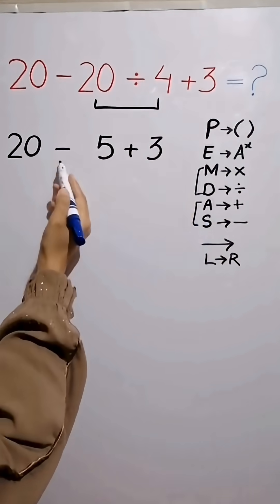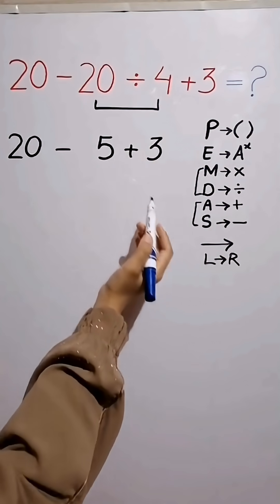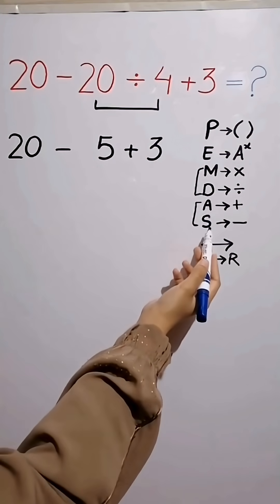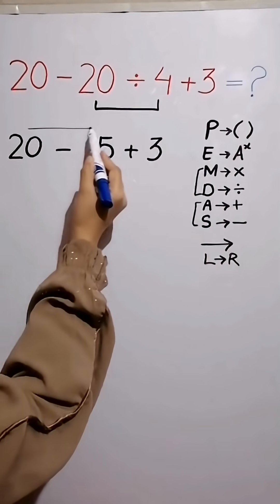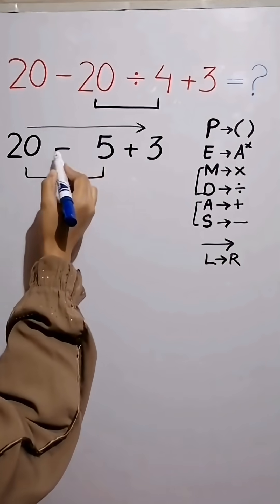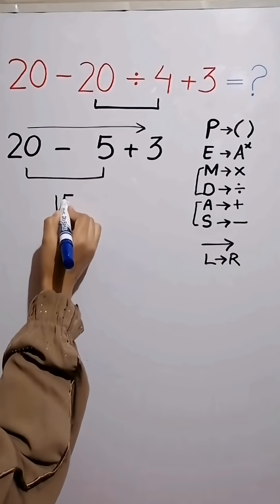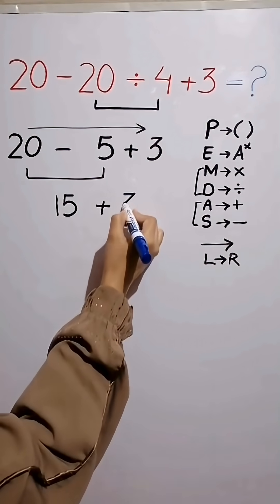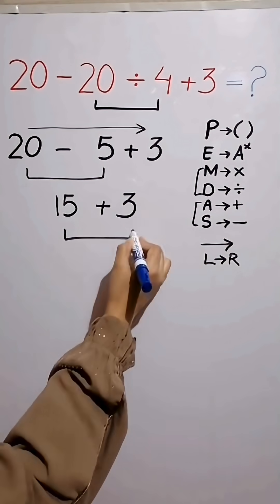Now we have subtraction and addition. Addition and subtraction have equal priority and we have to move from left to right. So according to this rule, we first do subtraction between 20 and 5, that equals 15, and then bring down 3 as it is. And finally, 15 plus 3 equals 18.